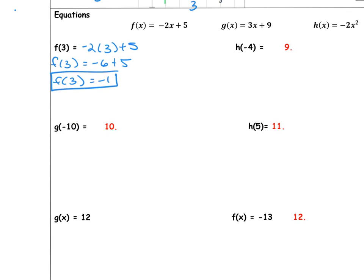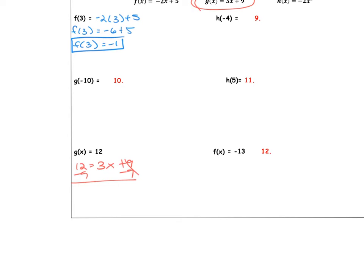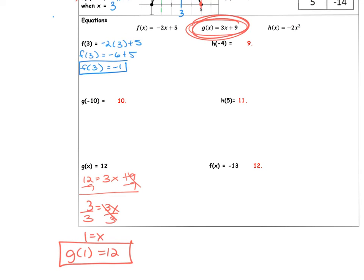On this next one, it says g of x is 12. So I'm going to use this function here. g of x equals 12 means that the function is equal to 12, not x. The function is equal to 12. So I'm going to say 12 equals 3x plus 9. I subtract 9 from both sides. I get 3 equals 3x. Divide by 3, and I get that 1 equals x. So this means g of 1 equals 12. When x is 1, the function is equal to 12. Which makes sense. If you go back and plug in 1 right here, you should see that it's 12.